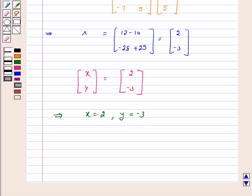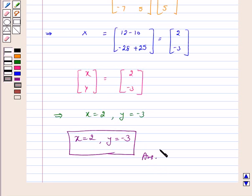So we have solved the above system of linear equations using matrix method and our answer is x is equal to 2 and y is equal to minus 3. I hope the question is clear to you. Bye and have a good day.